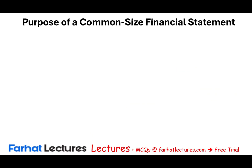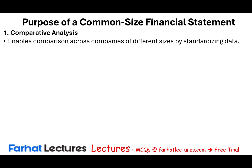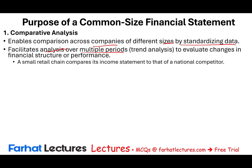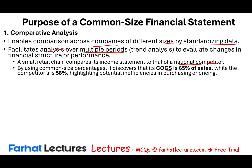The purpose of the common-size financial statement is to enable comparison across companies of different sizes by standardizing data — turning it into percentages. For example, a small retail chain compared its income statement to national competitors and discovered its cost of goods sold is 65% of sales while competitors are at 58%. This means they have inefficiencies in purchasing or pricing, because their cost of goods sold is higher than the competitor.